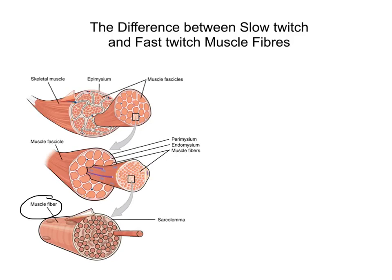We see this muscle fascicle is divided up into individual muscle fibres. Then zooming in on one of those fibres we can see the sarcolemma, which is like the cell membrane. We've got the actin and myosin filaments inside. So that's just a quick overview of what we're looking at.